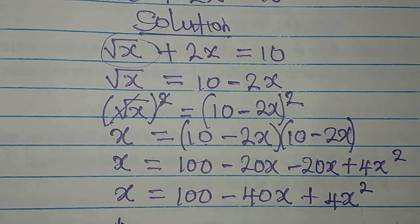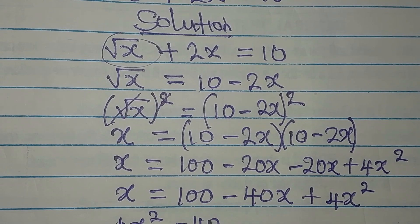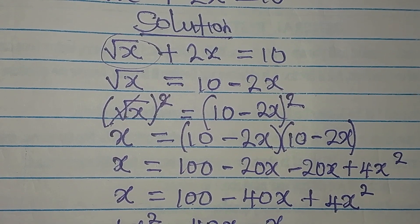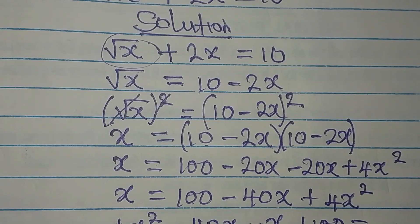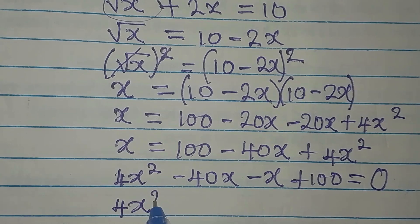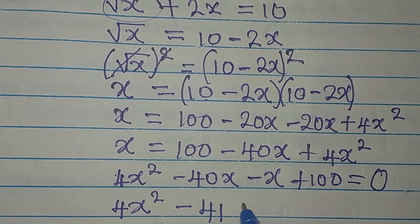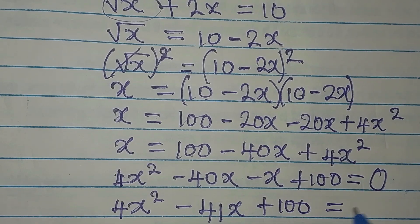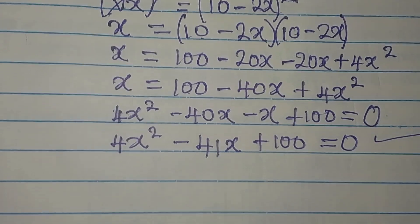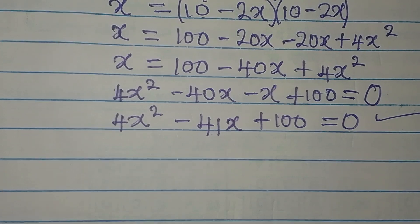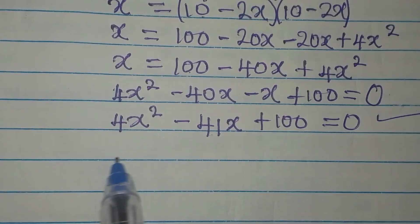Now we rearrange: bring everything to one side, so 4x squared becomes positive, minus 40x comes over, and then plus 100. Nothing remains on the right, so we put zero there. We now have 4x squared minus 41x — because minus 40x minus x gives minus 41x — plus 100 equals zero. This right here is a quadratic equation.